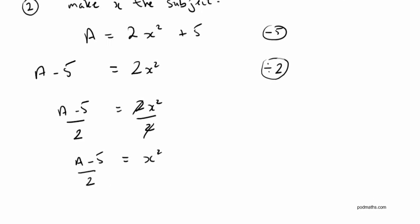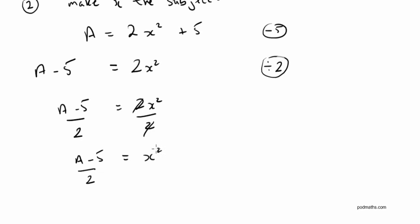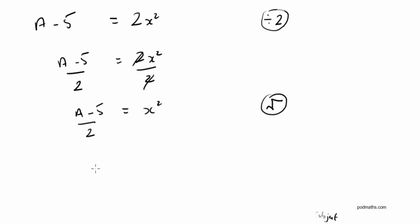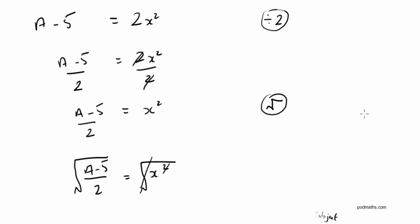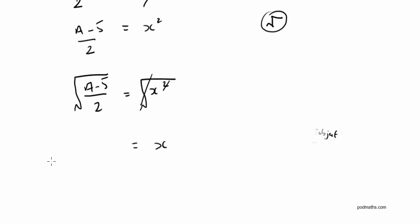The final thing is to remove or undo that square. The undoing of squaring something is to square root it. So if I square root both sides, on the left the square root cancels out the square, leaving just x. I've shown the extra step so you can see that the square root and the square cancel each other out. You'd normally go straight from x squared equals (a minus 5) over 2 to x equals the square root of (a minus 5) over 2.